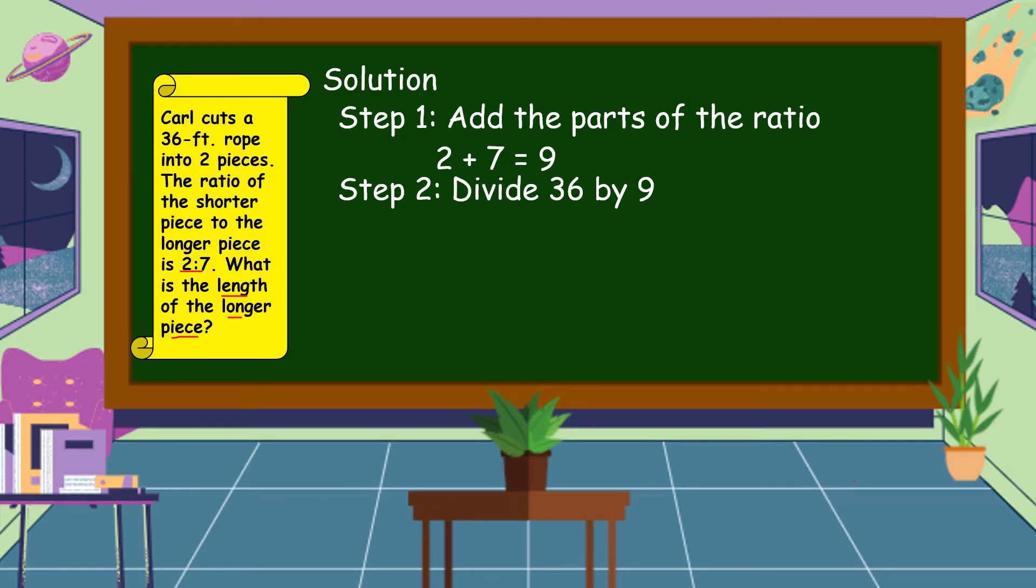So 36 ÷ 9 = 4. Step 3: Multiply each part of the ratio by 4.